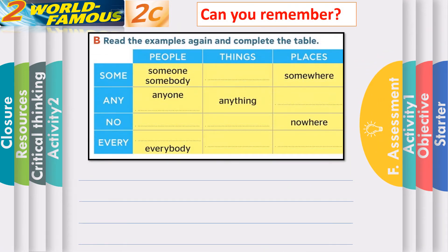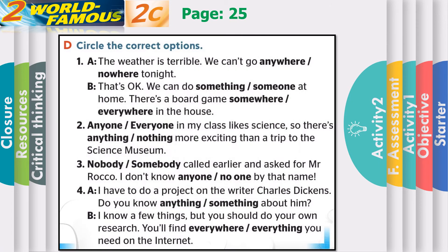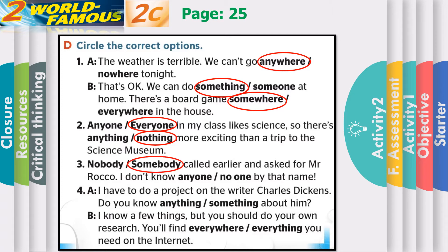Now can you remember what we have just worked on? Try to pause the video and do the exercise again. Now question D: Circle the correct option. The weather is terrible, we can't go anywhere tonight. That's okay, we can do something at home — there's a board game somewhere. Everyone in my class likes science, so there's nothing more exciting than a trip to the science museum. Somebody called earlier and asked for Mr. Rocco — I don't know anyone by that name. I have to do a project on the writer Charles Dickens — do you know anything about him? I know a few things, but you should do your own research — you will find everything you need on the internet.